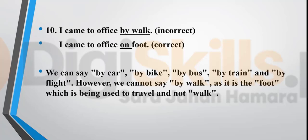'I came to office by walk' — this is incorrect. The preposition 'by' is used with vehicles and modes of transport: by car, by bike, by bus, by train, by flight. When you walk on foot, you say 'I came to office on foot.' You don't say 'by walk' or 'on walk' — that is wrong. The correct expression is 'on foot,' because foot is not a vehicle used for travelling.